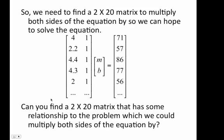Do you remember how we do it? Showing that we'll end up with a square matrix of 2 by 2. Now, the big question is, can we find a 2 by 20 matrix that has some relationship to the problem that we could multiply by on both sides to maintain that equality in this matrix equation? Well, it turns out that we do have that.